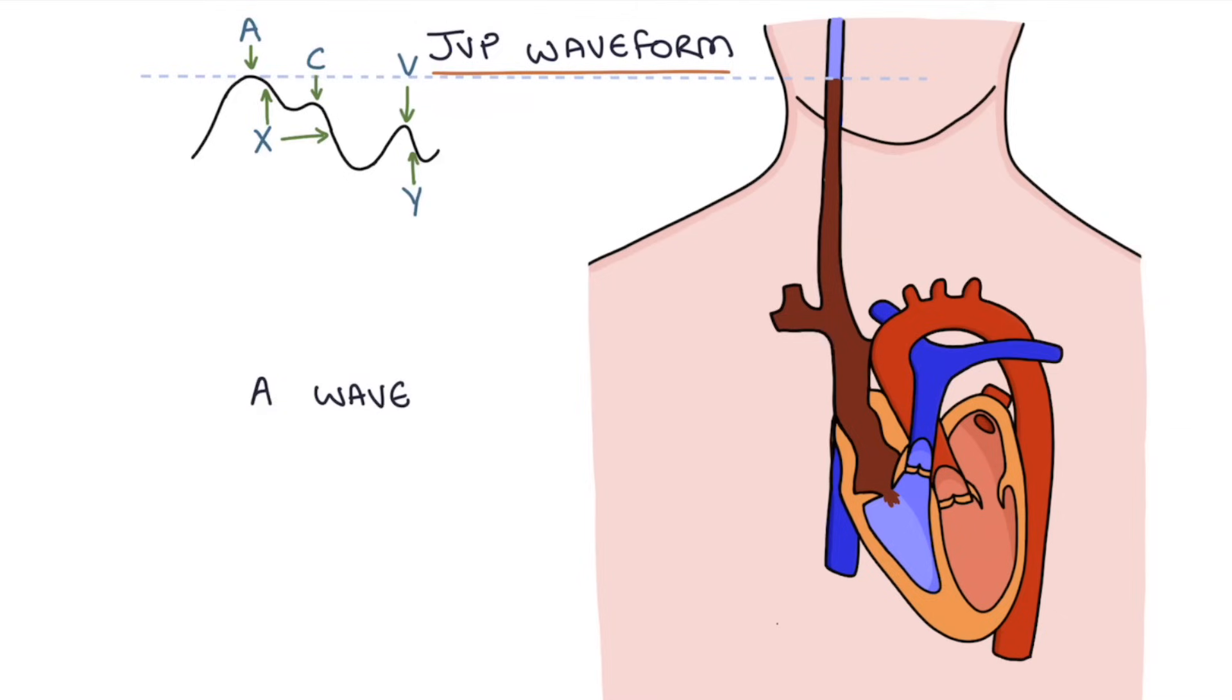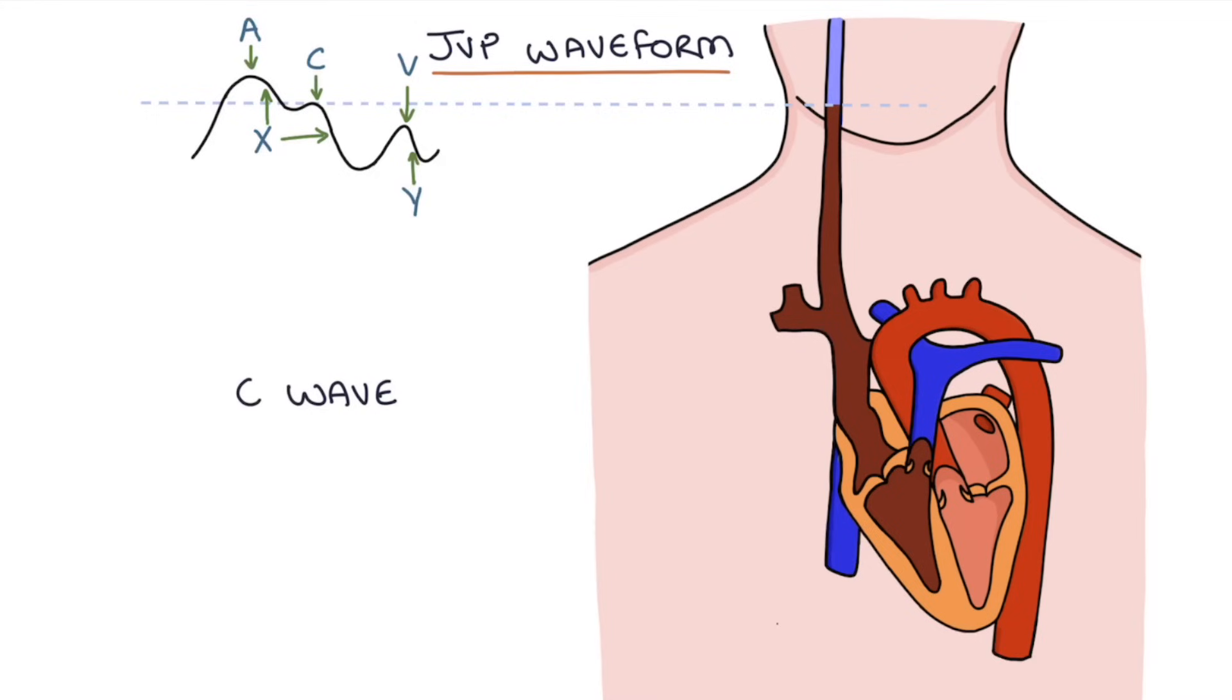So let's go through it all again briefly as a summary. The A wave is caused by atrial contraction, causing the atrial pressure to rise, forcing blood both downwards and upwards into the JVP. The X descent starts with the relaxation of the atria and blood flowing back into the atrium. The C wave is caused by right ventricular contraction causing the tricuspid to bulge into the right atria.